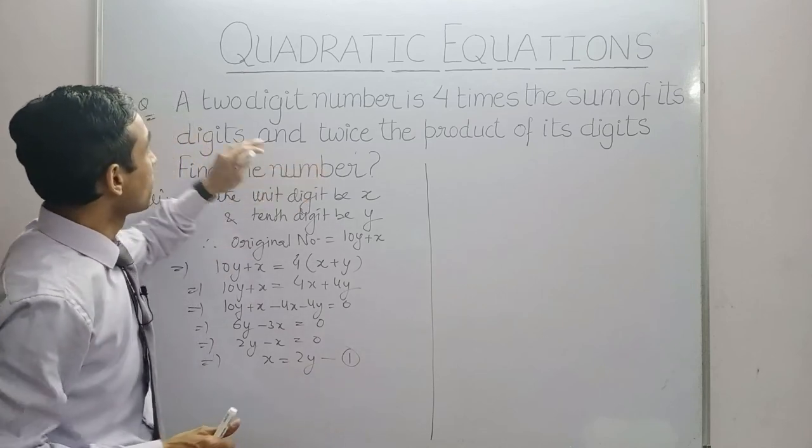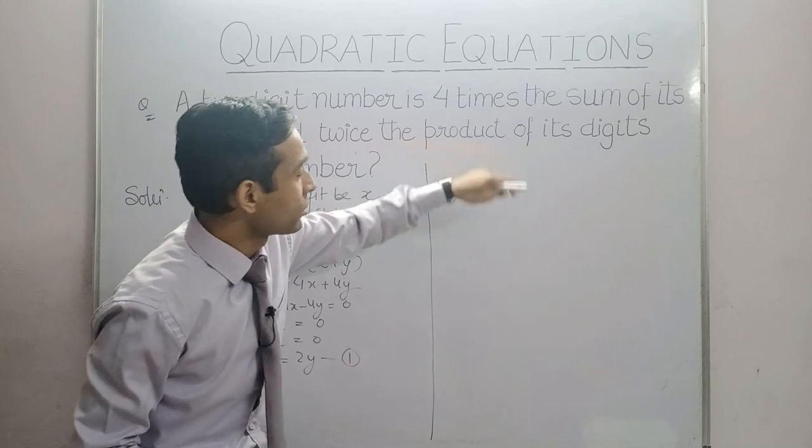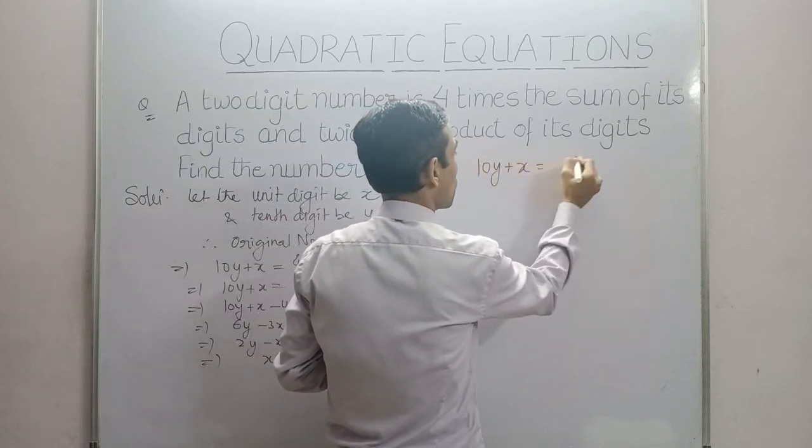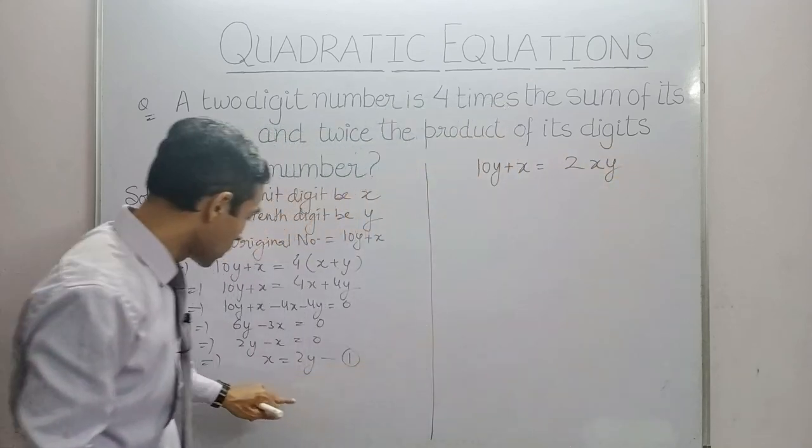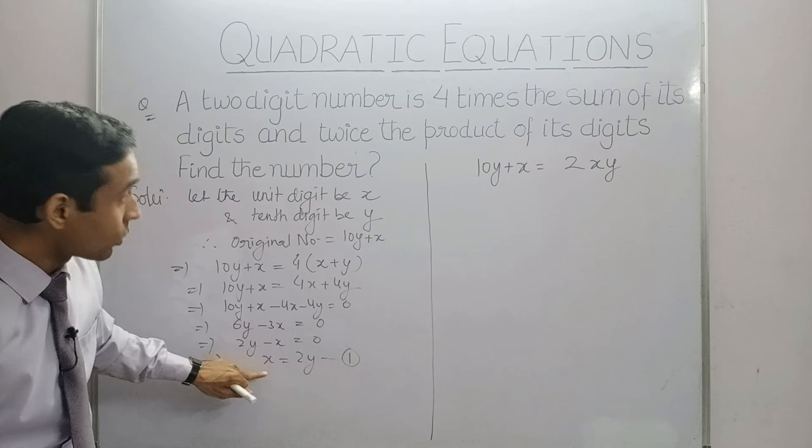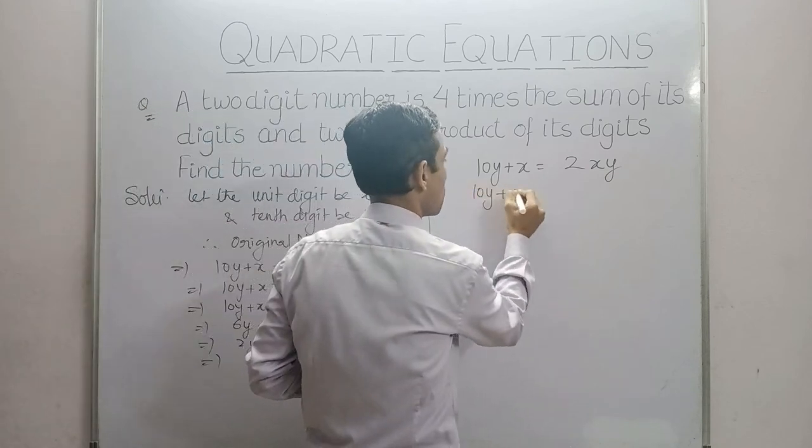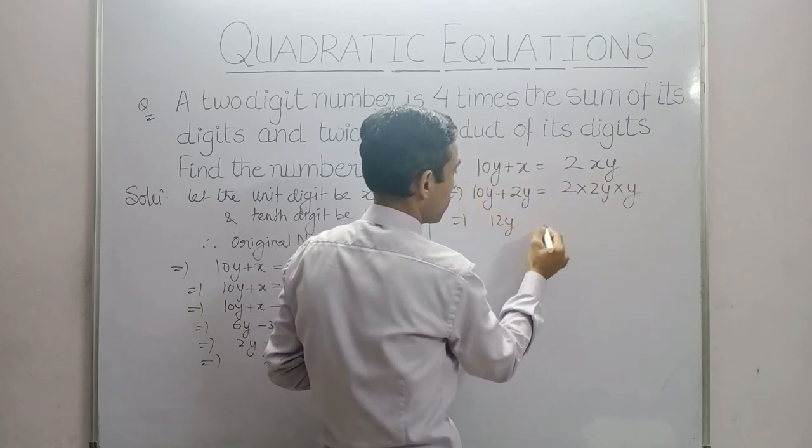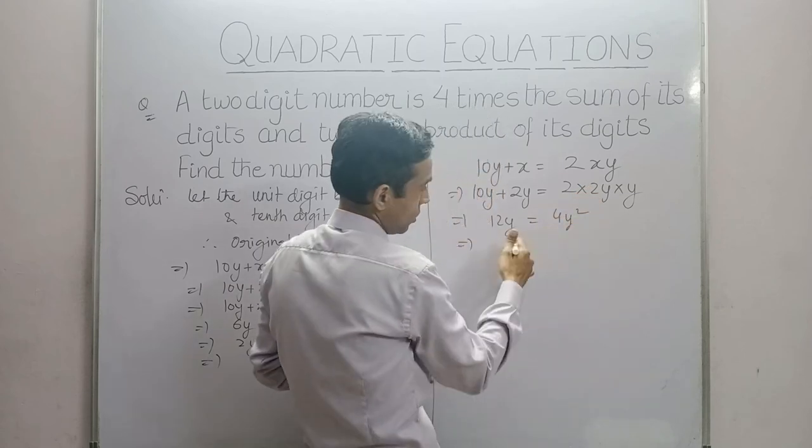Now, second condition. The two-digit number is twice the product of its digits. That means 10y + x = 2xy. Now let's substitute equation 1 value in this equation. We will get 10y + 2y = 2(2y)(y).